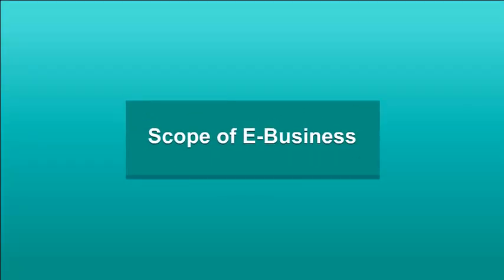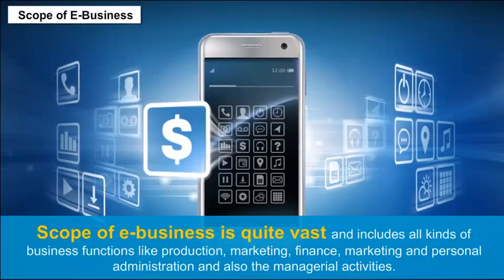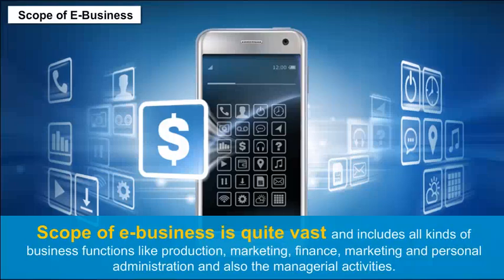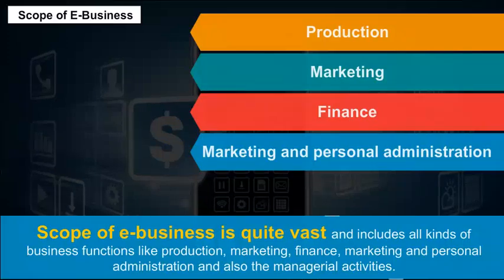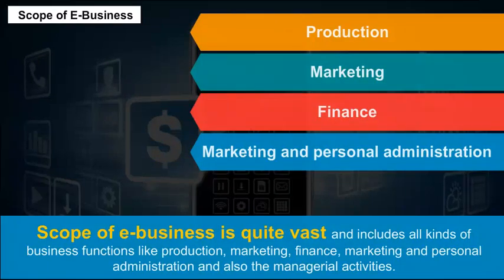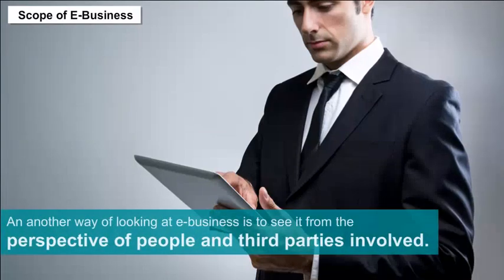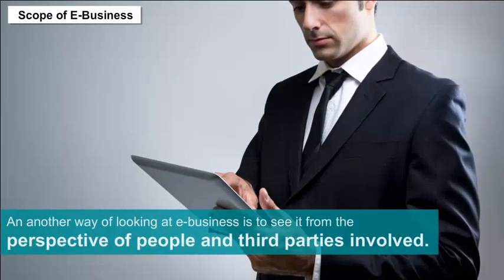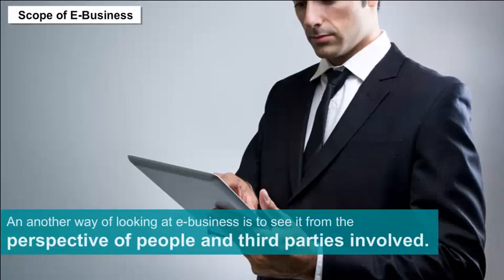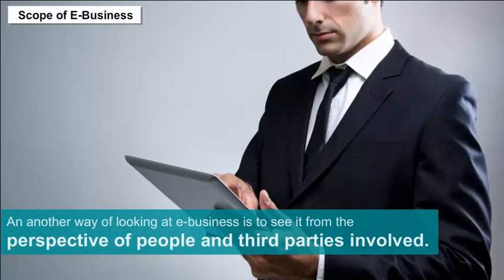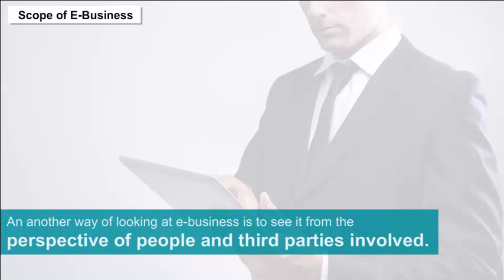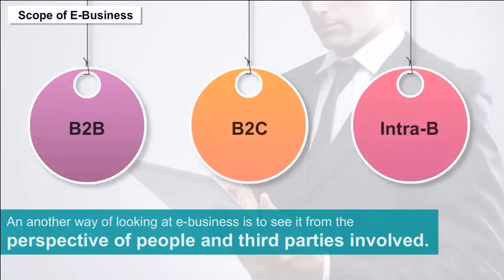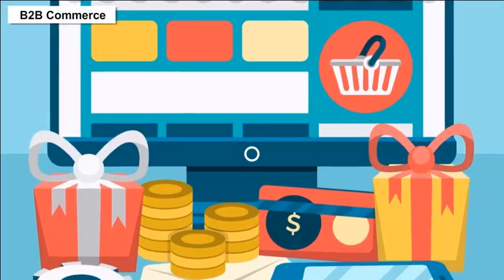Scope of E-business: The scope of e-business is quite vast and includes all kinds of business functions like production, marketing, finance, and personnel administration, as well as managerial activities. From the perspective of people and third parties involved, an organization's e-transactions can be classified into three categories: B2B, B2C, and intra-B, or an organization's internal processes.